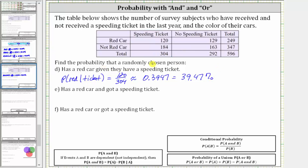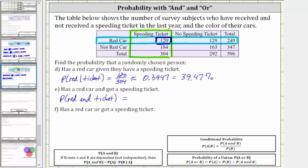Next, we're asked to find the probability that a randomly chosen person has a red car and got a speeding ticket. We find the red cars in this row and those that got a speeding ticket in this column. Because we're looking for the probability a randomly chosen person has a red car and got a speeding ticket, we're looking for the number of people in the intersection of this row and column, which is the 120 people here. These 120 people have a red car and got a speeding ticket. So the probability of a red car and — and means intersection — a ticket is equal to 120 out of the total of 596.